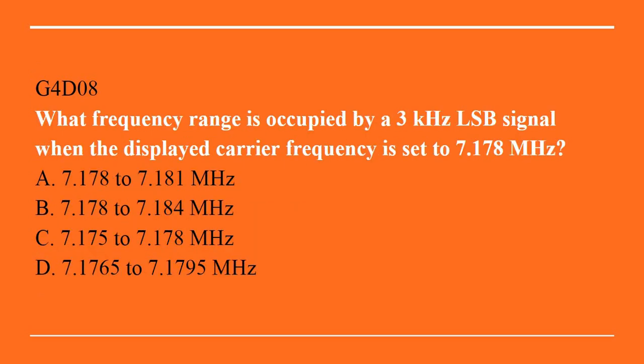G4D08: What frequency range is occupied by a 3 kHz lower sideband signal when the displayed carrier frequency is set to 7.178 MHz? A. 7.178 to 7.181 MHz. B. 7.178 to 7.184 MHz. C. 7.175 to 7.178 MHz. Or D. 7.1765 to 7.1795 MHz. The correct answer is C. 7.175 to 7.178 MHz.